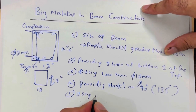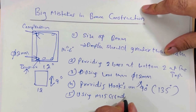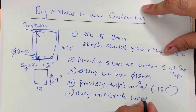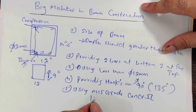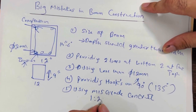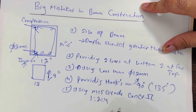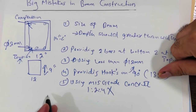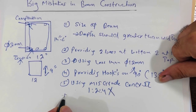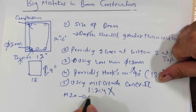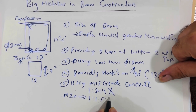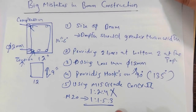Another big mistake is using M15 grade concrete, where the ratio is 1:2:4. This is wrong. You should use M20 grade concrete, where the ratio is 1:1.5:3. That is the correct way.